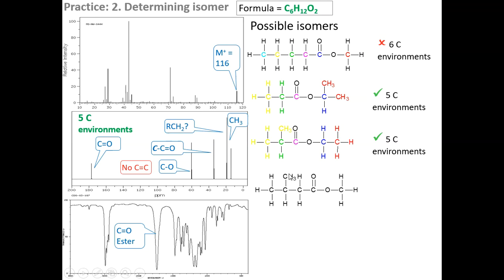Or I could draw something like this, where again, we've got these two carbons identical, so there are a number of isomers, but these all have got five carbon environments, so they could all suit according to the NMR, but we need to now choose based on the mass spec.